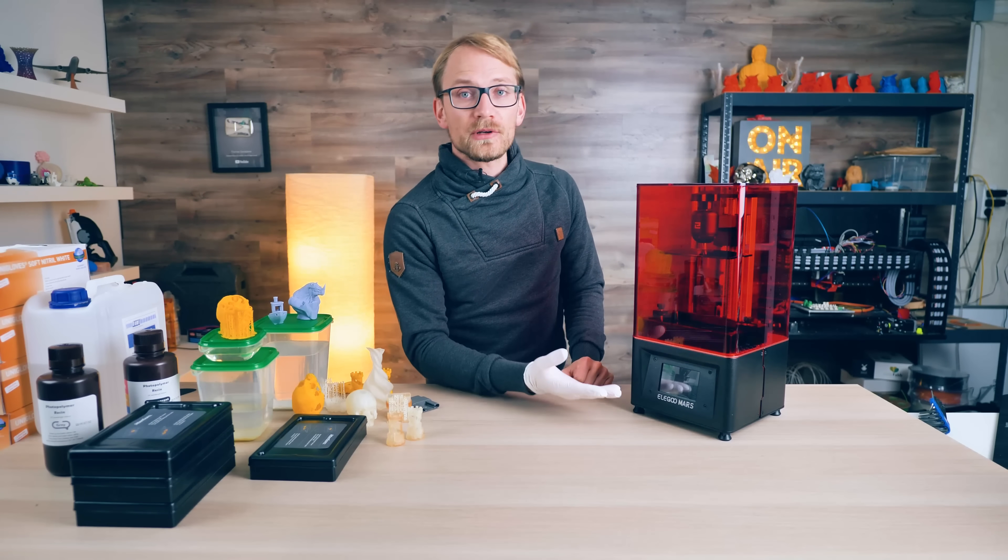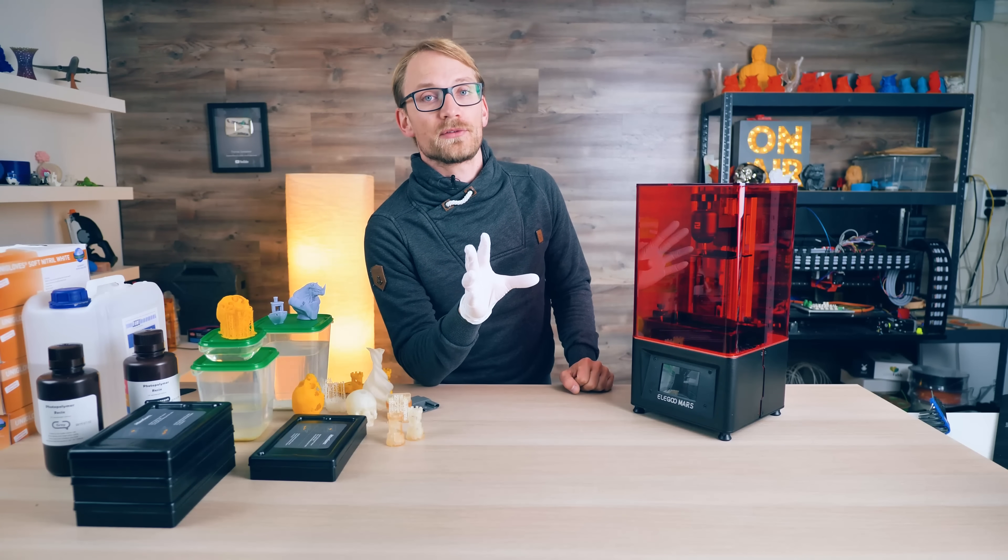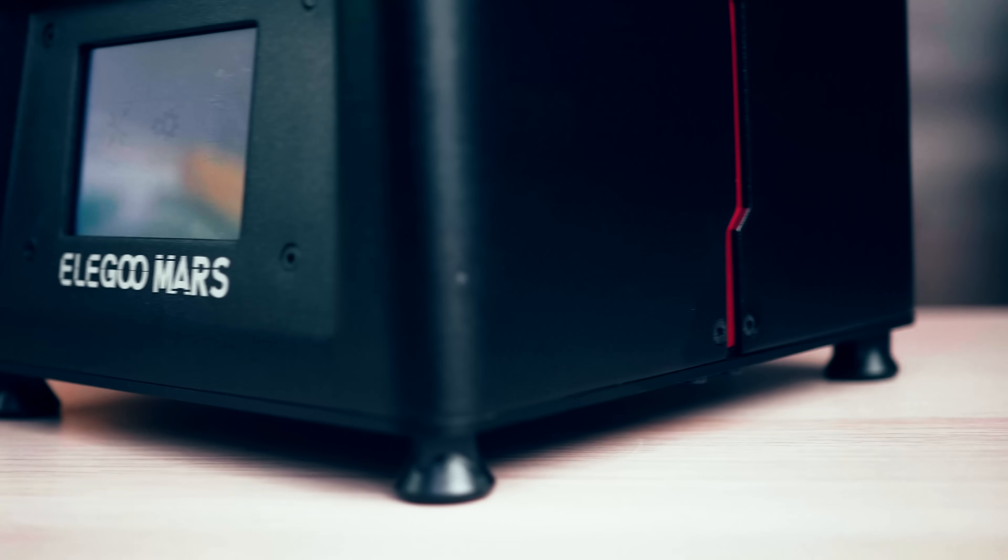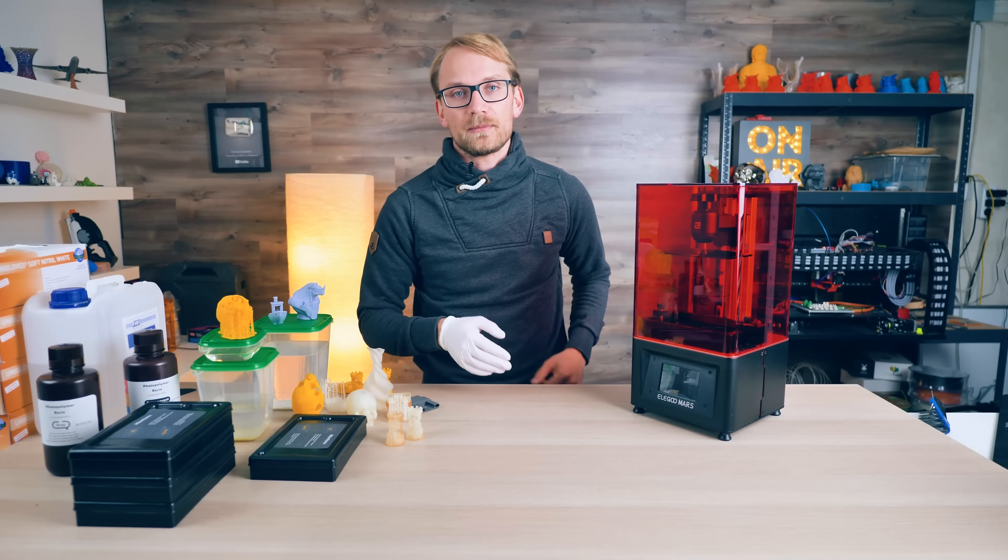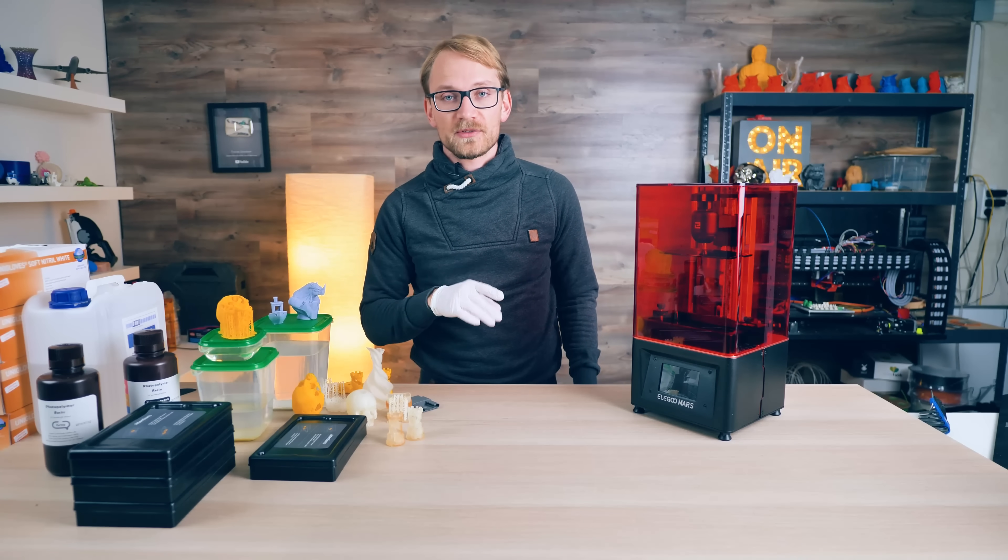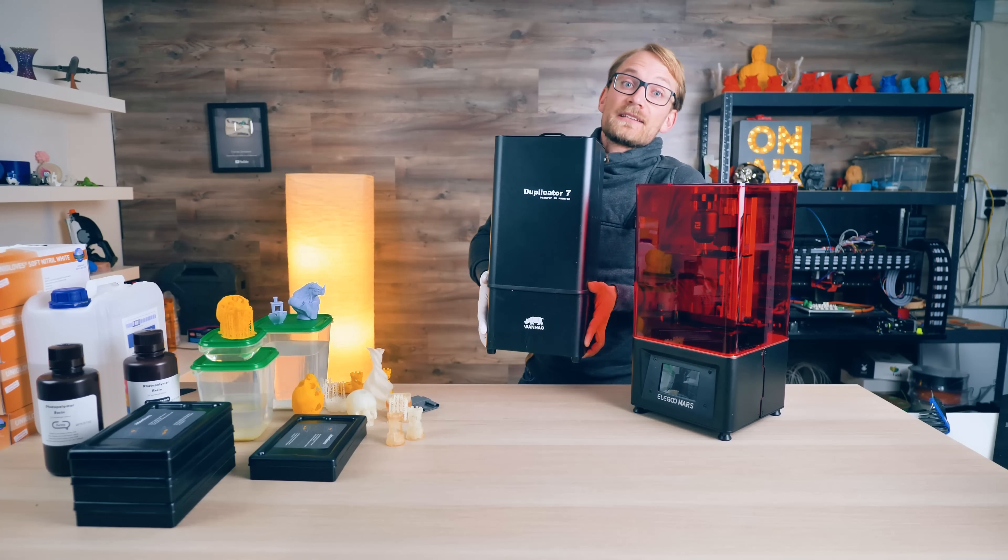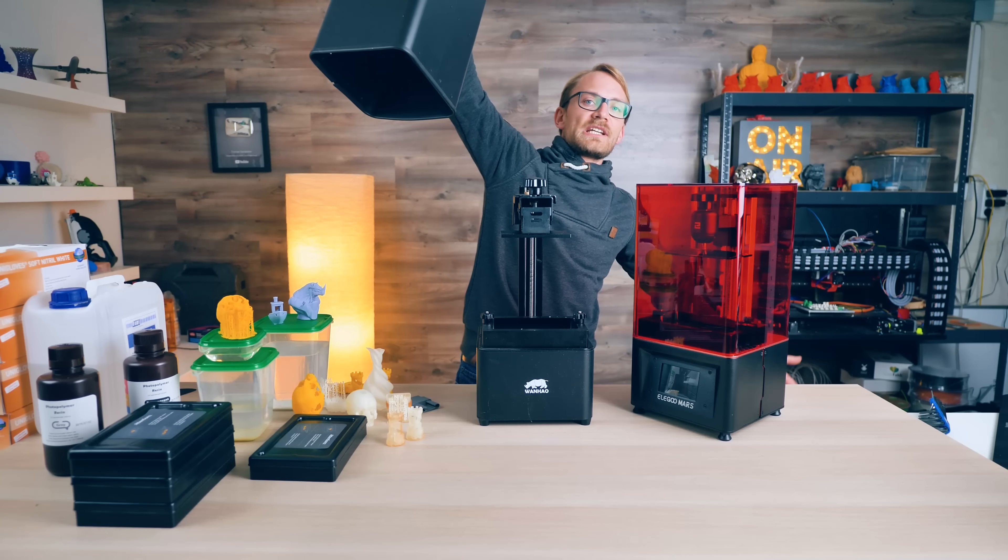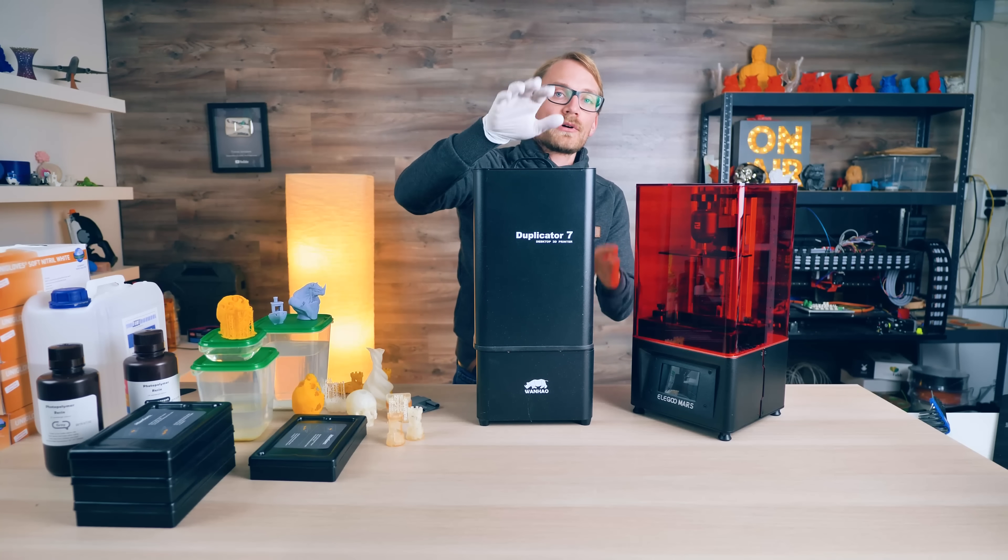For some reason, when Elegoo introduced the Mars for around 280 bucks, the internet just went crazy over it. But it's not like the Mars really did anything new and there were already machines like it out there, even in a very similar price bracket, depending on which machine was on sale at what time. My experience has mostly been with FDM so far, filament-based printers, but I did have a Wanhao Duplicator D7 SLA printer for a good while now, and even though it seems to be practically the same machine as the Mars, I never really warmed up to the Duplicator 7 for many different reasons.